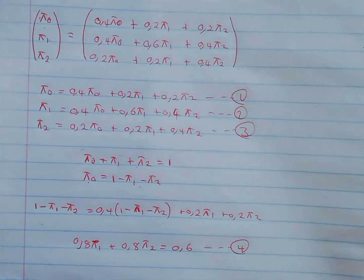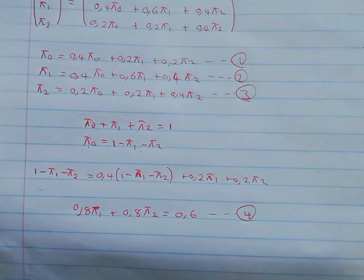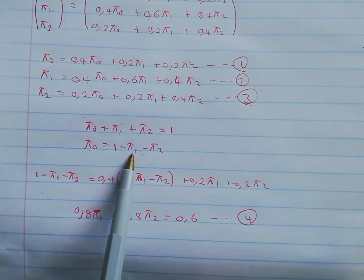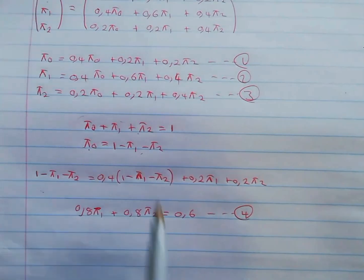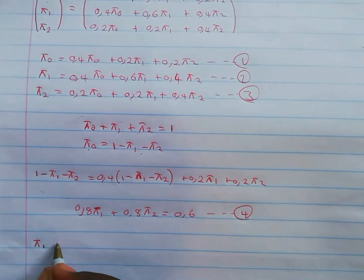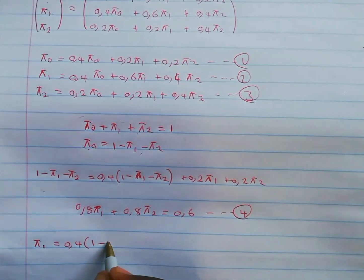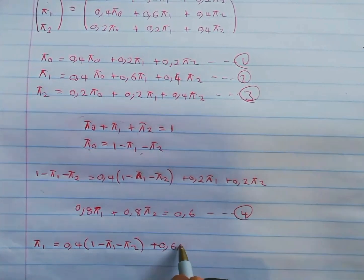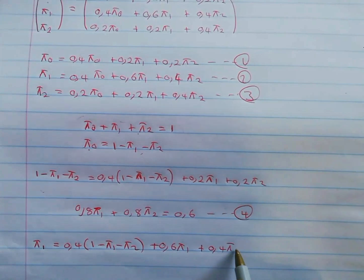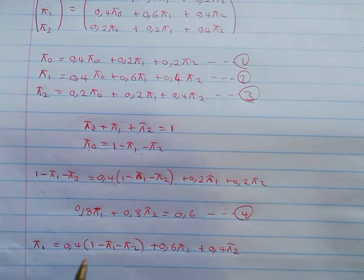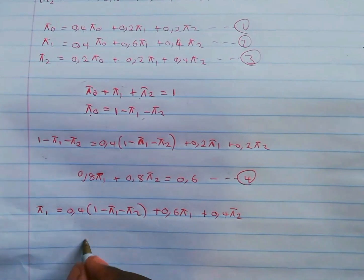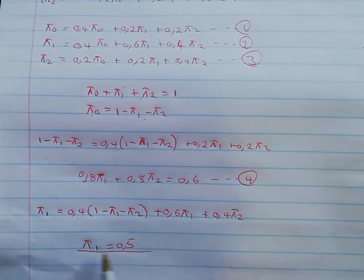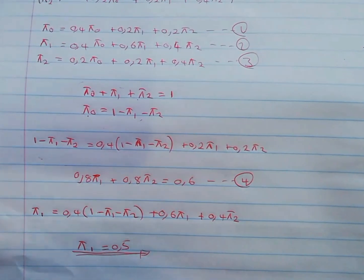Substituting π₀ = 1 − π₁ − π₂ into equation 2: π₁ = 0.4(1 − π₁ − π₂) + 0.6π₁ + 0.4π₂. Simplifying this, we get π₁ = 0.5.